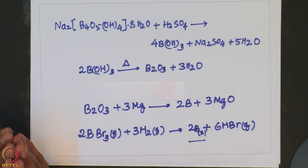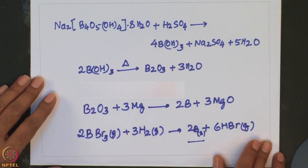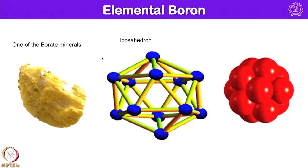Boron crystallizes in a variety of forms all containing icosahedral B12 unit. You can see here, this is how the boron, this is one of the boron minerals I have shown here. Pure boron has a composition of B12 and having the geometry of icosahedral. We have essentially 12 vertices. This is the other way of showing using a space filling model B12.